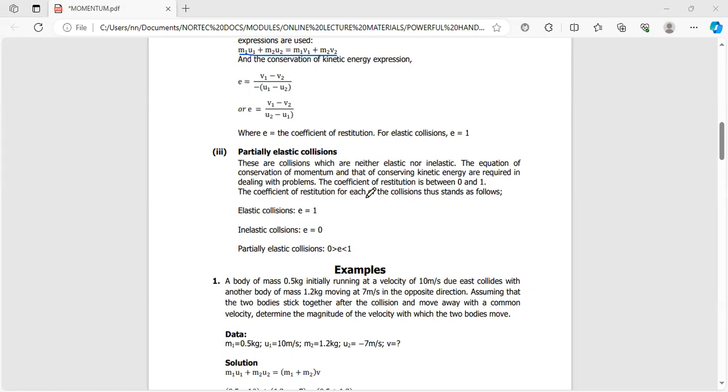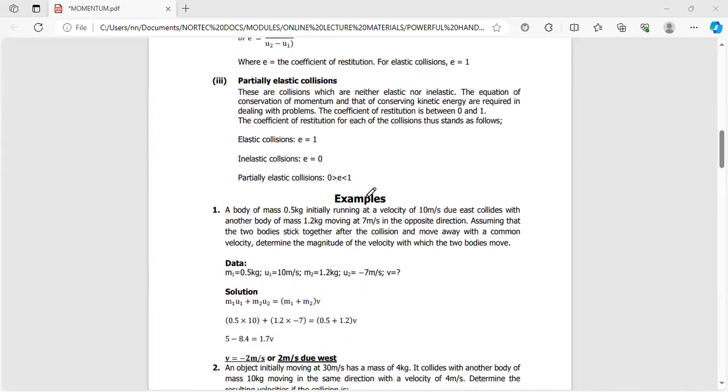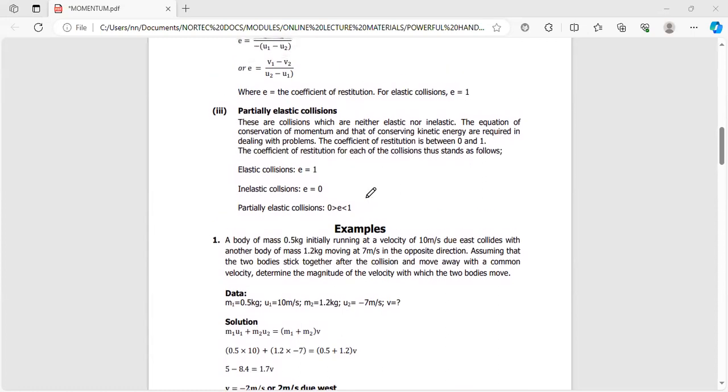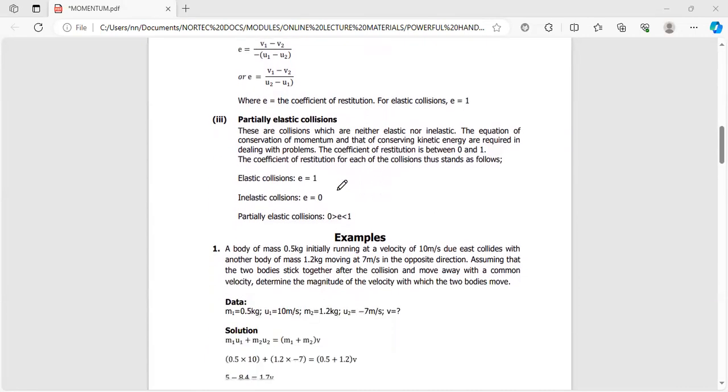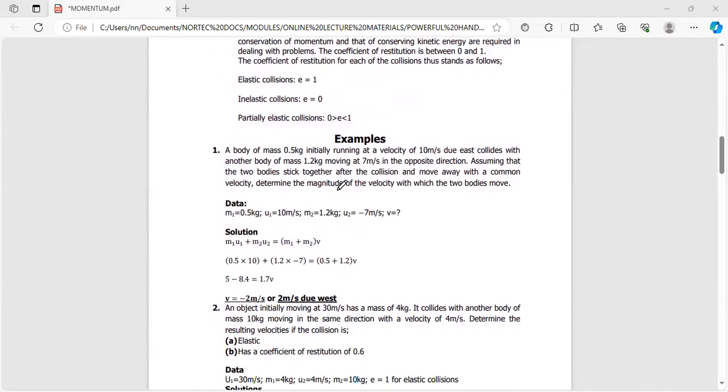For partially elastic, the value is between 0 and 1. You cannot have 0 or 1, but any numbers between the two. The formulas you use are the same ones we're using for elastic.